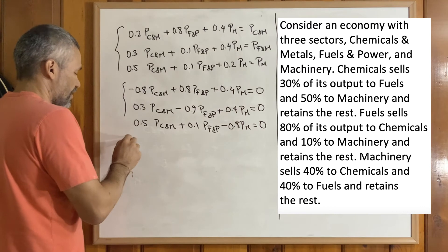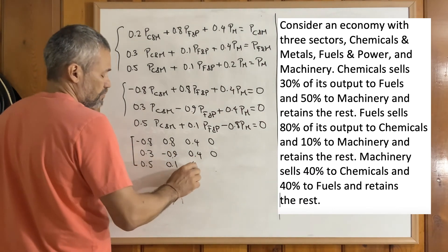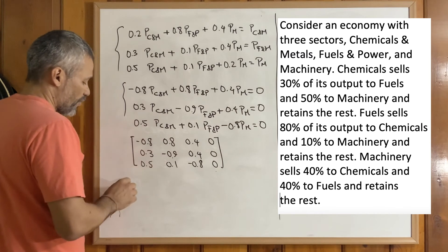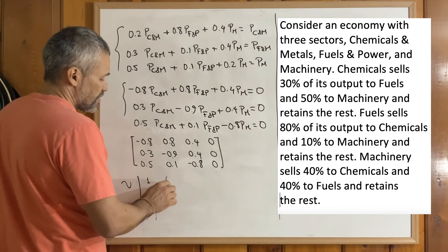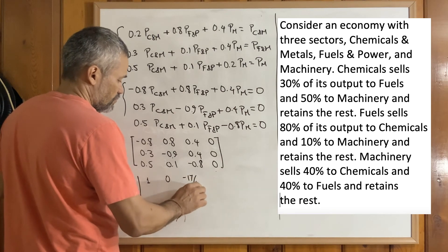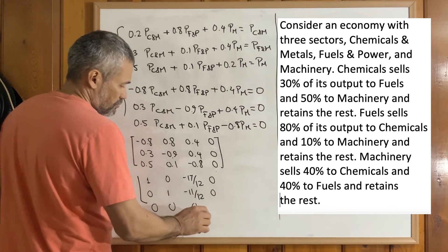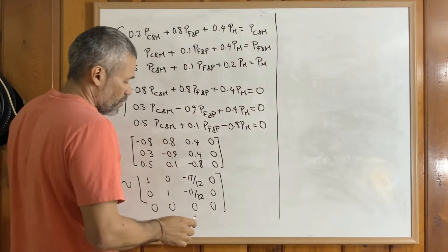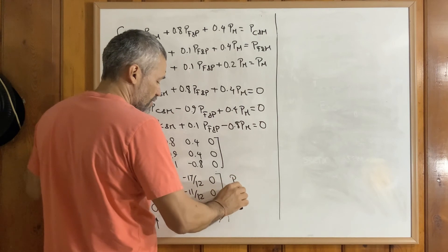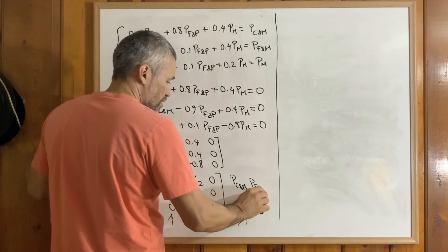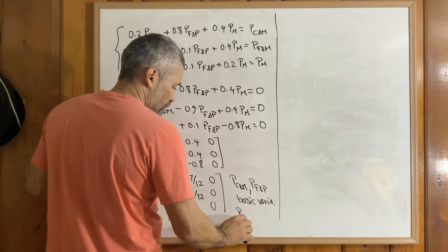We solve this homogeneous system by creating the augmented matrix. Performing row reduction, we find that the matrix is row-equivalent to a reduced form. From this, we identify that three variables are basic variables and P of M is a free variable.